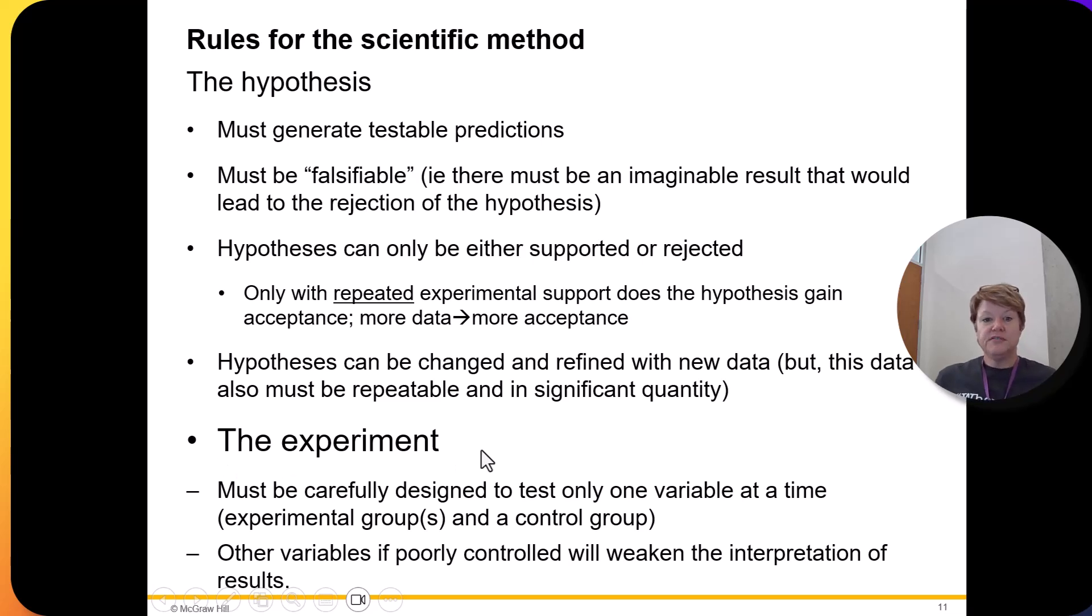In terms of experiments, we will be looking at some experiments, and the key to experiments are that you can only test one variable at a time. So you have a control group and an experimental group. For example, let's say you've got a new drug, and you think that it helps lower blood pressure. Then what you do is you separate your participants into two groups. One group gets the drug. One group does not get the drug. You measure their blood pressure before they take the drug. You measure everybody's blood pressure after, and then you compare.